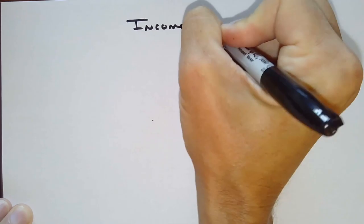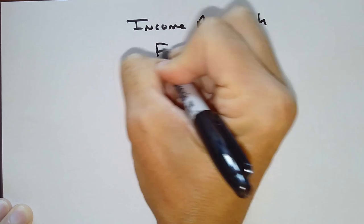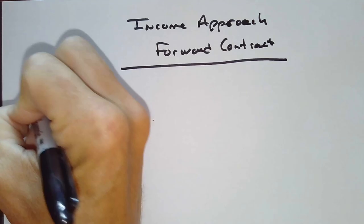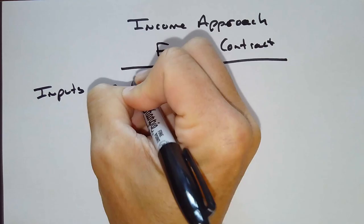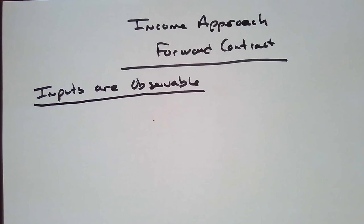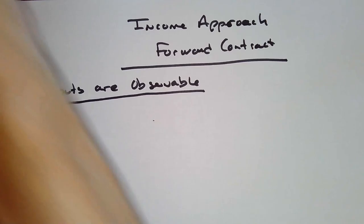So we're going to use an income approach on a forward contract. We will assume for a moment that all of these inputs are observable to market participants. So we're going to make that as an assumption. So how do we do this? Well, we go back to our variables. We start thinking about the different variables that have to be in here. Here's our different variables.